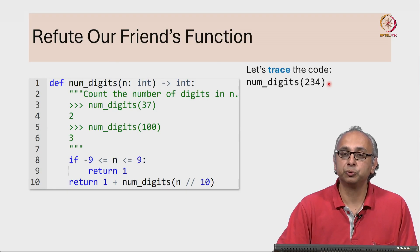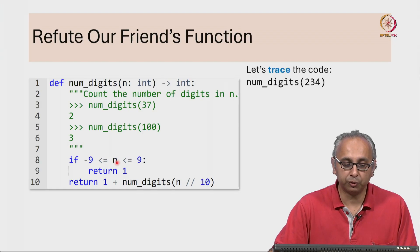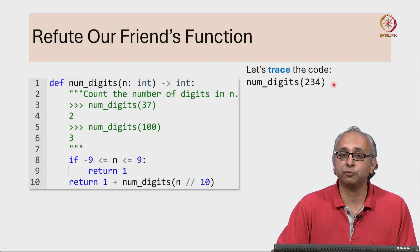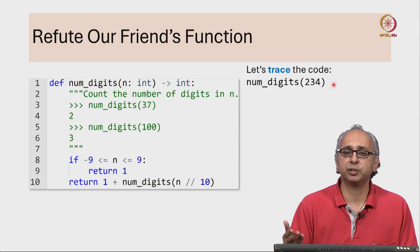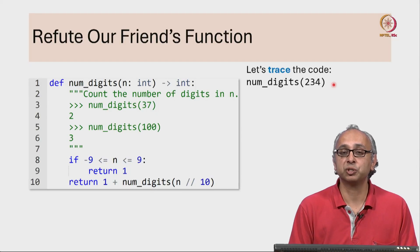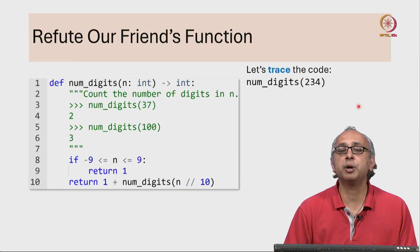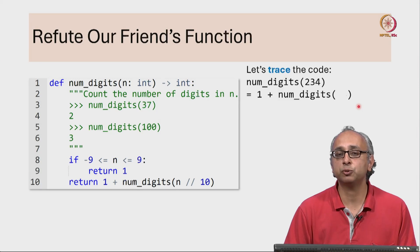Now on the input 234, our friend would find that that is not the base case. So we would come to the recursive case and first we would have to calculate num digits of n floor division 10. So what is 234 floor division 10? Well 234 divided by 10 is 23.4. Floor division, remember, rounds down towards negative infinity. So 234 floor division 10 would of course just be 23.